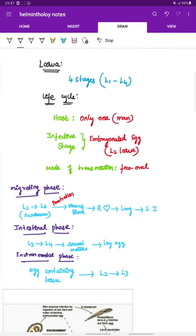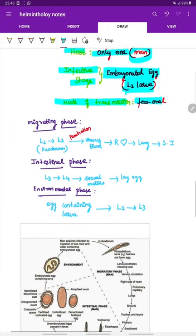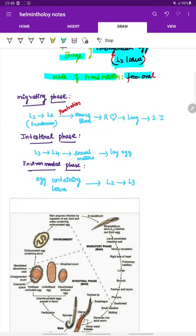Next, the larvae. There are four stages of larvae, L1 to L4. Then the life cycle. Host: it involves only one host, that is man. Infective stage is the embryonated egg which contains L2 larvae within it. So the infective stage is egg containing L2 larvae and the mode of transmission is feco-oral. There are three phases: migrating phase, intestinal phase, and environmental phase in the life cycle.